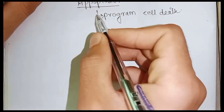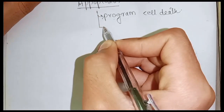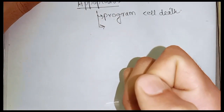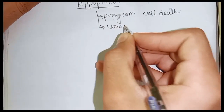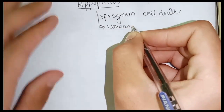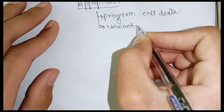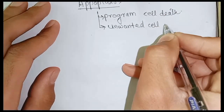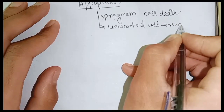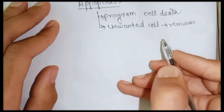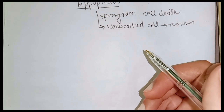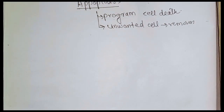The second point to note is that apoptosis removes unwanted or undesirable cells. If you have an immune cell, it can remove the cell. Unwanted cells will be removed. The unwanted cell is identified and removed.